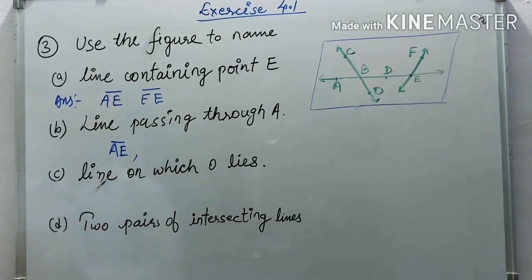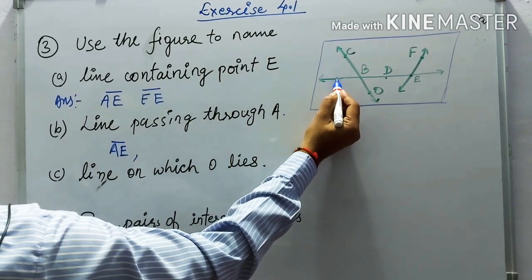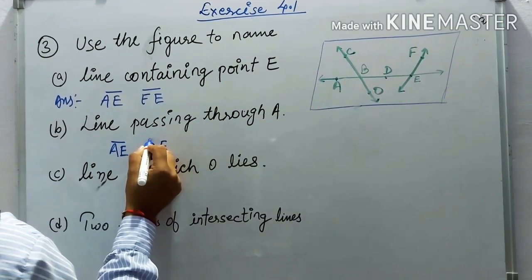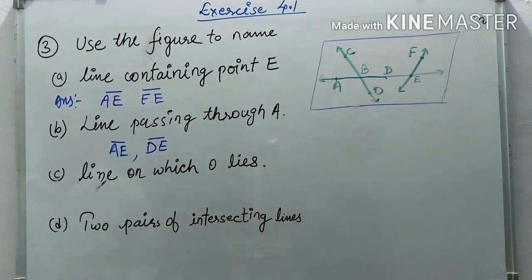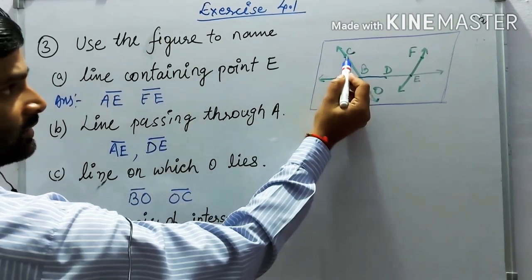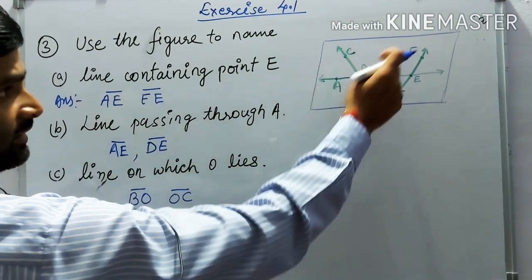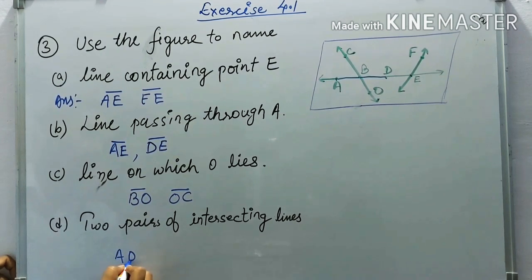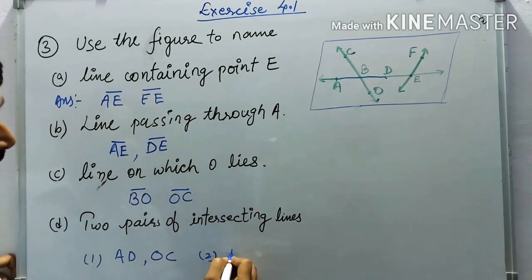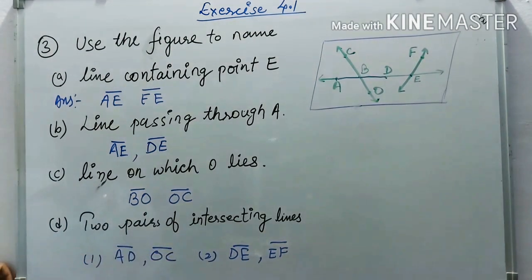Continuing question three: lines passing through point A also include line AD and line DE, since they extend through A. The line passing through O includes BO and OC. Two pairs of intersecting lines are: AD and OC, and DE and EF.